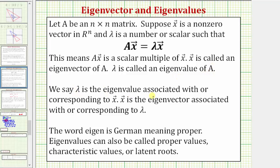We say lambda is the eigenvalue associated with or corresponding to the vector x, and vector x is the eigenvector associated with or corresponding to lambda.